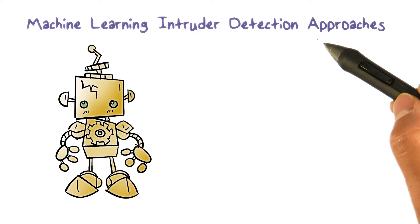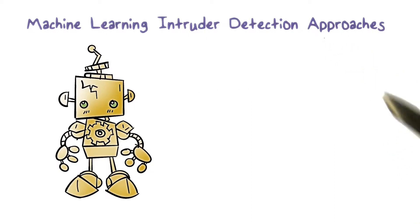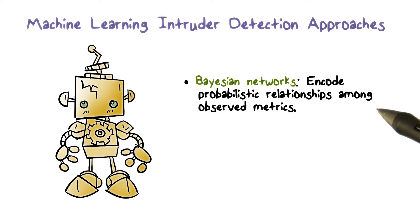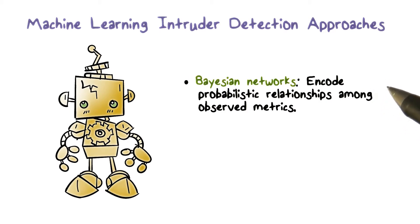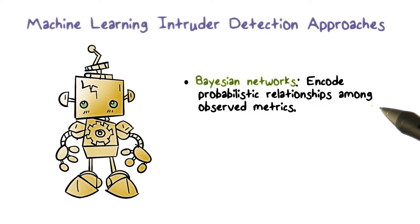A variety of machine learning algorithms can be used for intrusion detection. These include Bayesian networks. Bayesian networks encode the conditional probabilities among observed events. For example, how likely an email is sent by a user if the current time is 2 AM.